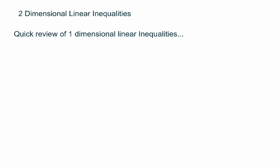A one-dimensional linear inequality would be something like this: 2x + 4(x - 3) < 6. I am making this up on the fly. This is one-dimensional because it only has one variable in it, and when you graph things in one dimension, you just graph them on a number line.